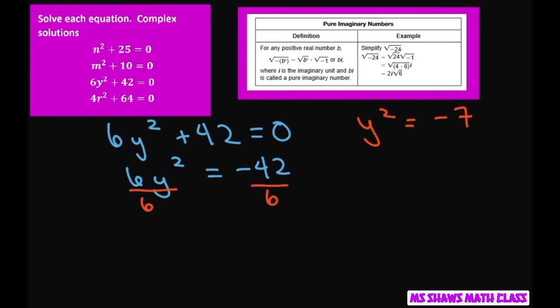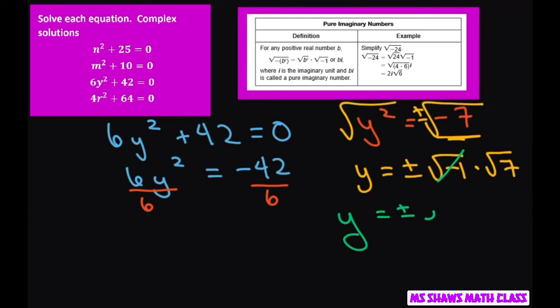Again, you take the square root of both sides. Make sure you do plus and minus. So y equals plus and minus—let's break this out as square root of negative 1 times the square root of 7. The square root of negative 1 is just i. So you get y equals plus or minus i square root of 7.